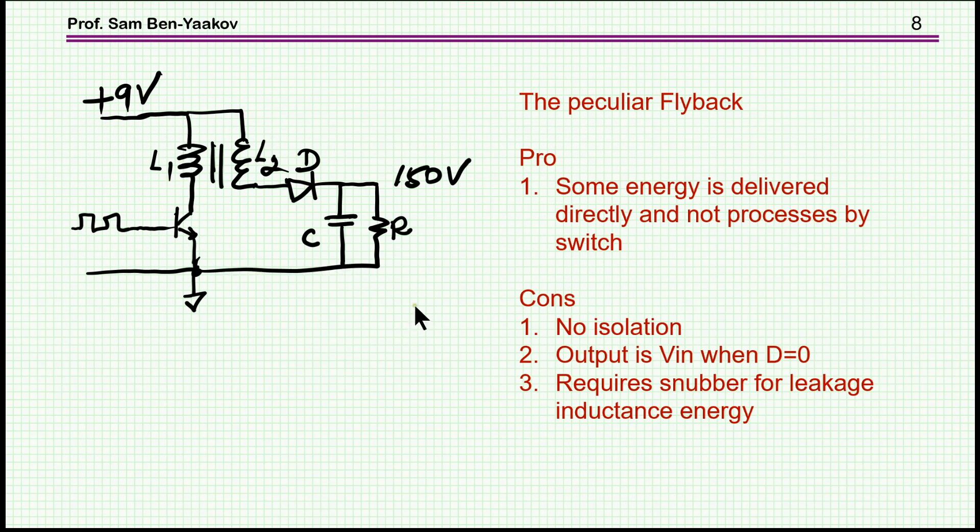On the other hand, we have many problems. First of all, there is no isolation. Secondly, the output voltage is always connected to the input. So even if there is no switching here, the voltage will be 9 volt in this particular case without switching, because you have a direct connection here, which in many cases may not be so good.